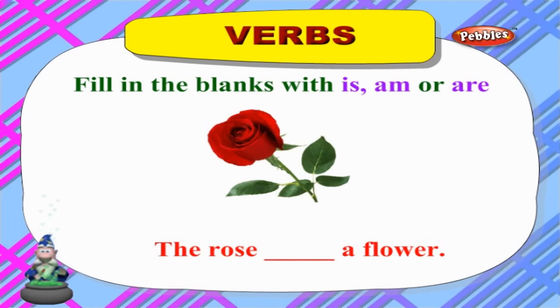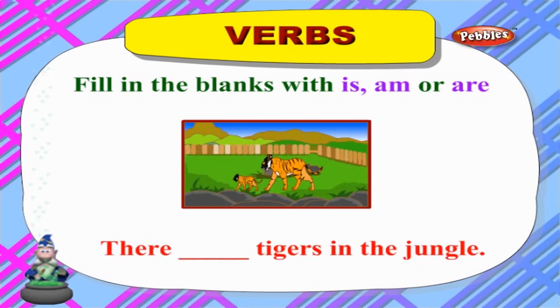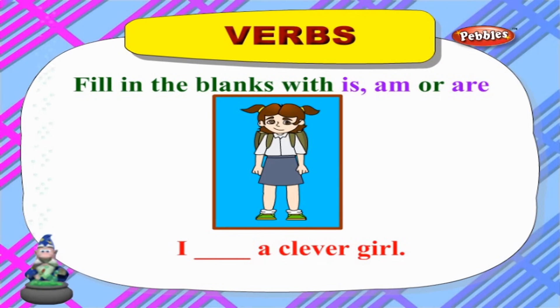Now I am going to teach you where we can use 'is', 'am', and 'are'. 'Is' is used when we talk about a singular noun. 'Am' is used when we talk about ourselves. 'Are' is used when we talk about a plural noun. For example: 'The rose ___ a flower' — 'The rose is a flower.' 'There ___ tigers in the jungle' — 'There are tigers in the jungle.' 'I ___ a clever girl' — 'I am a clever girl.'